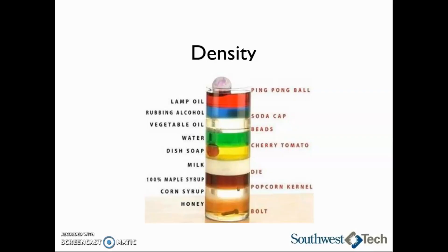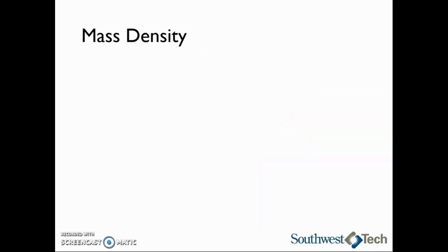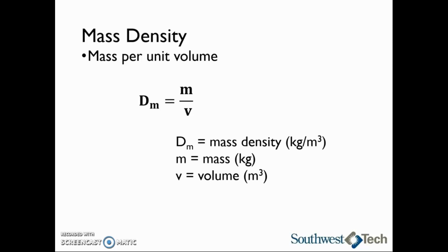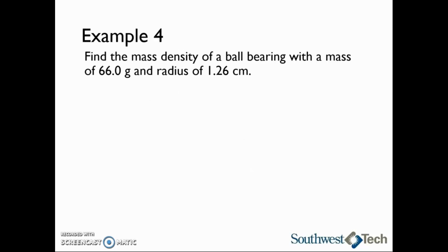Our ninth lecture video on properties of matter will cover density. There are two different ways we can look at density: we can calculate a mass density or a weight density. Typically when we are given metric or SI units, you will use the mass density. A mass density is a mass per unit volume. To calculate the mass density d sub m, you will take the mass of the substance and divide that by its volume. The mass density will have units of kilograms per cubic meter.